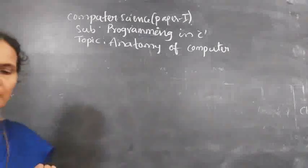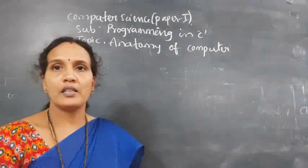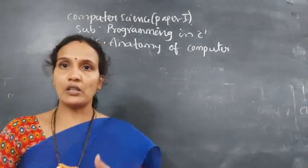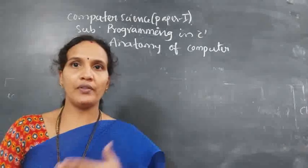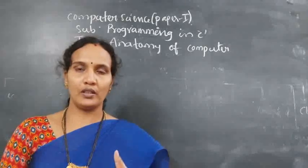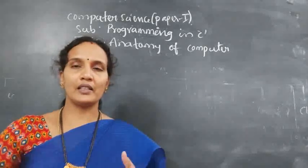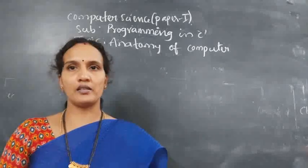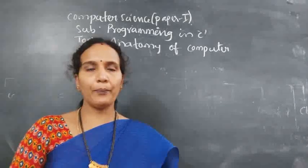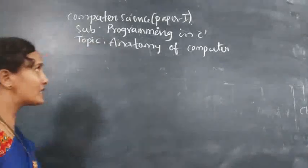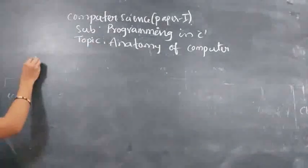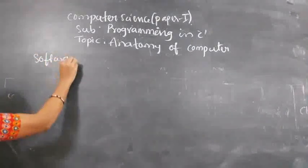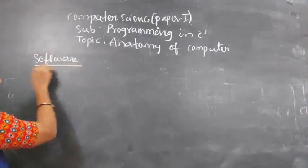This will complete the software of the system. In the hardware unit we have four components. After completing software, I will complete those. So first we will complete software. What is the software? How many types of software do we have?